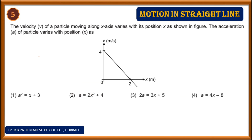Question 5: the velocity v of a particle moving along the x-axis varies with its position, shown in a v-x graph. We need to find how acceleration varies with position. Since time is not shown, we use: a = dv/dt = v·(dv/dx), eliminating the time term.